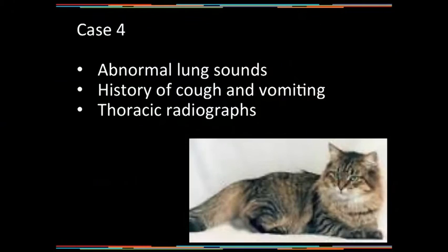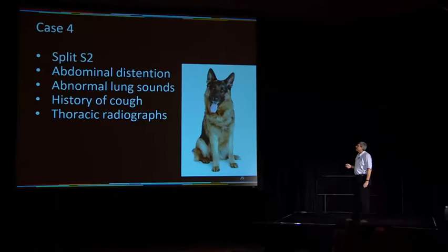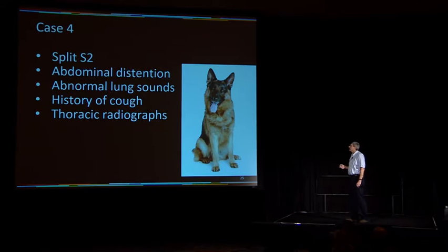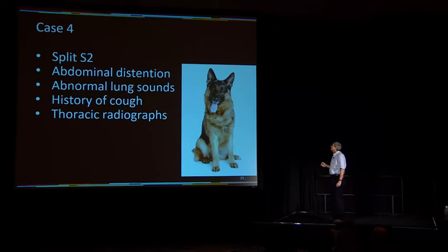Case number four: a dog with a split S2 — I'll leave that to the cardiologist to explain. Abdominal distension, abnormal lung sounds, history of a cough, and we've taken thoracic radiographs.